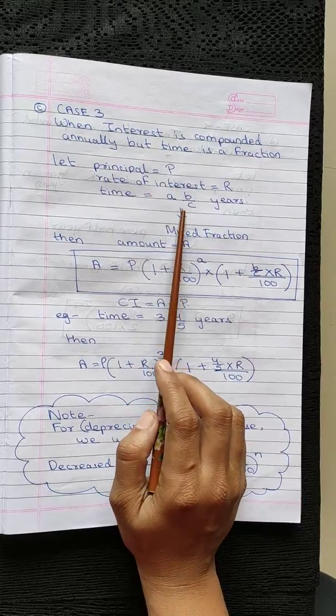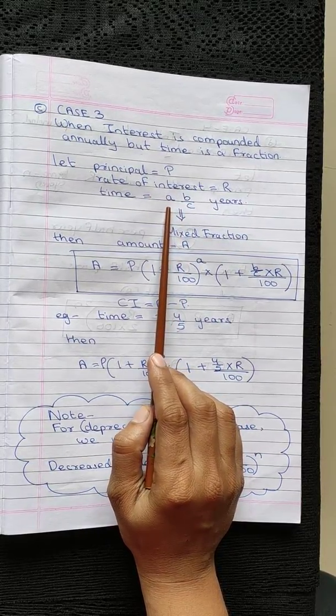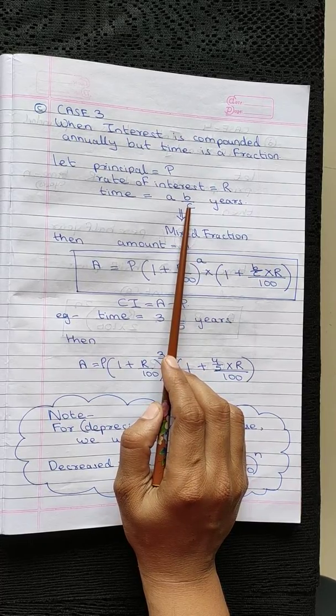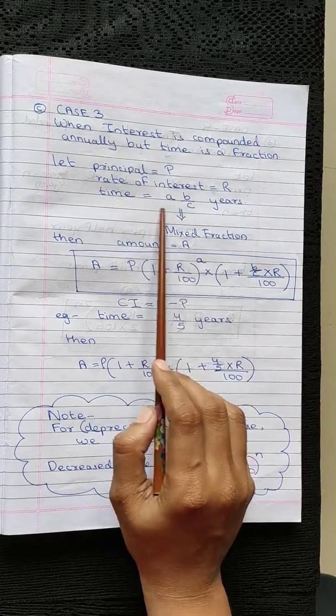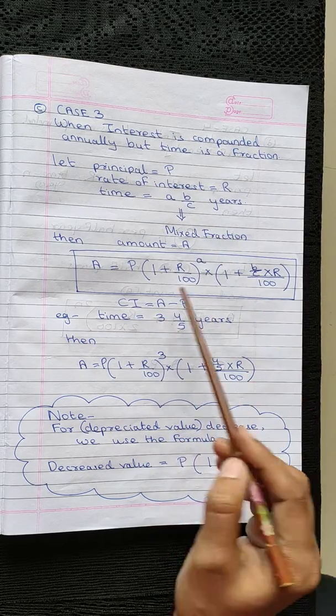In this case, the time is given in the mixed fraction where A is the whole number and B upon C is the fractional part. That means time is given in form of a mixed fraction.